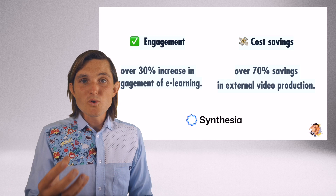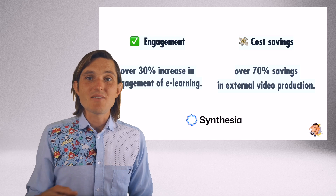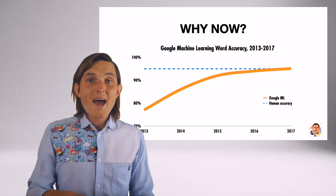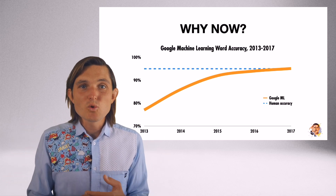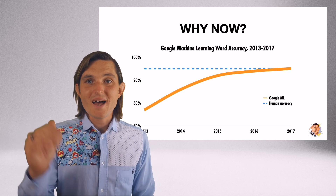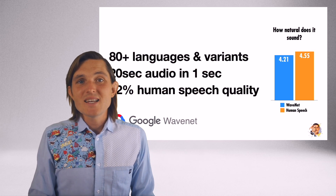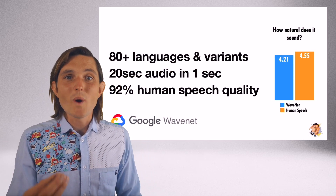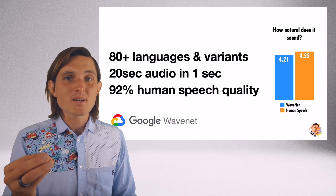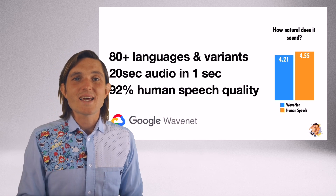Synthesia themselves also reports higher engagement and massive cost savings in video production by using synthetic media platforms. And why now? Why are we just now getting those tools accessible to everybody? Number one: Google machine learning for word accuracy surpassed human-level accuracy in 2017, just four years ago. The same thing is now happening with the production of voices. Google WaveNet is at 92% human speech quality and can do that in 80-plus different languages and variants, producing 20 seconds of audio in just one second of production.